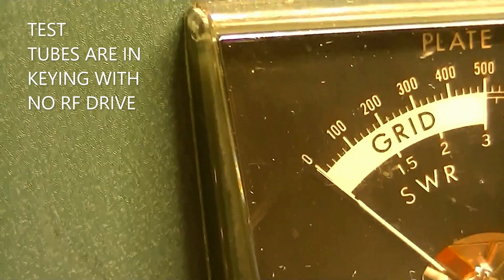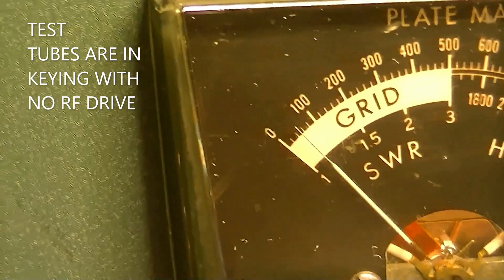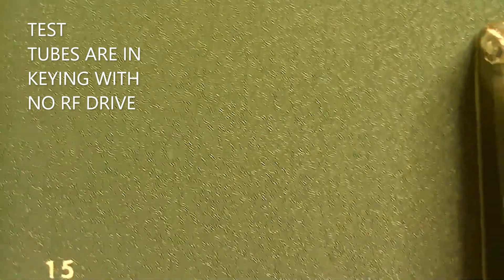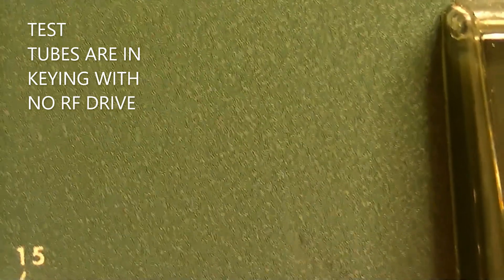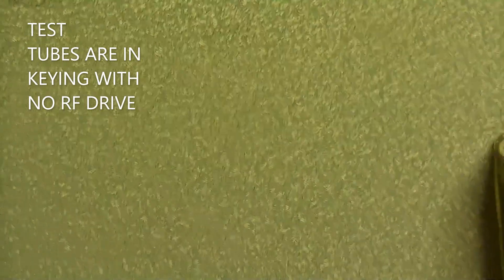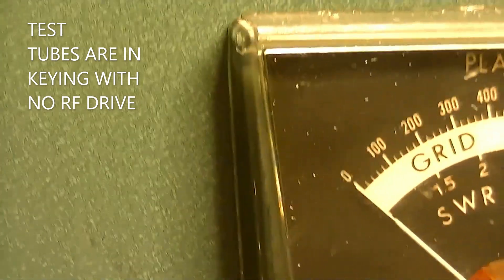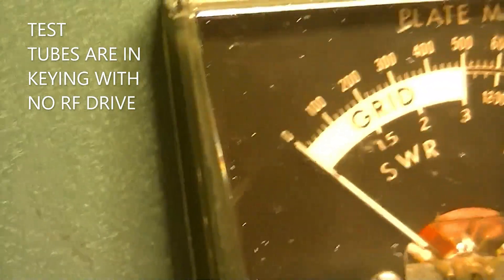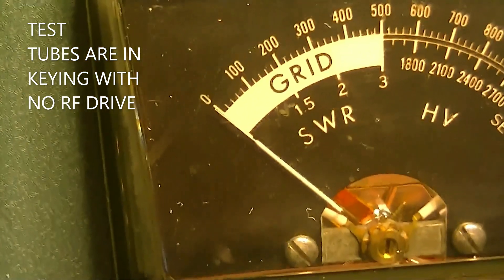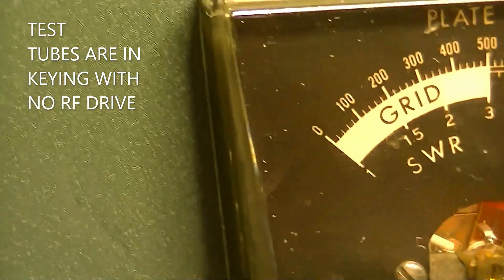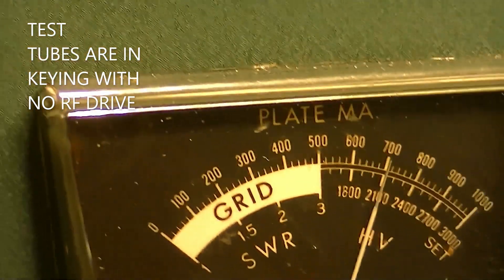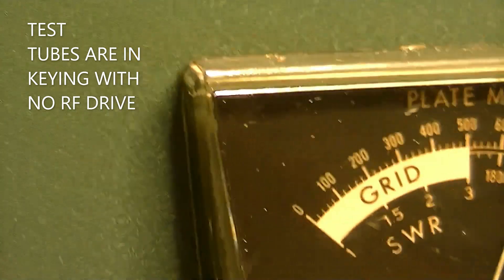We're looking at plate current, no drive, no load, 50-60 mils. So the bias is holding the plate current down just as it should. Look at the relative power meters, should be nothing. That's good. Look at the high voltage, down about 1900 which it should do. So I think we're good.